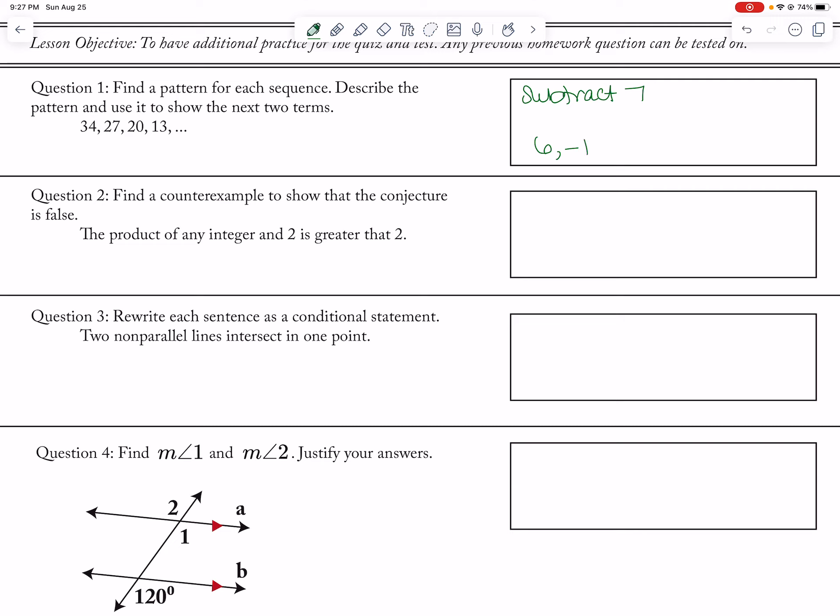We write this statement as a conditional statement: if two non-parallel... if the lines intersect, then they intersect—I don't know why I put the Y way over there—intersect at one point.